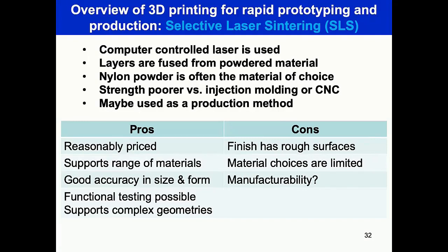Selective Laser Sintering (SLS) uses a computer-controlled laser to fuse powder materials spread by a roller layer by layer, with nylon powder often used as material of choice. Strength is comparable to injection molding or CNC. Advantages: reasonably priced, supports a wide range of materials, good accuracy in size and form, functional testing is possible, and supports complex geometry. Cons: relatively rough surface finish, limited material choices, and manufacturability is still a question mark.